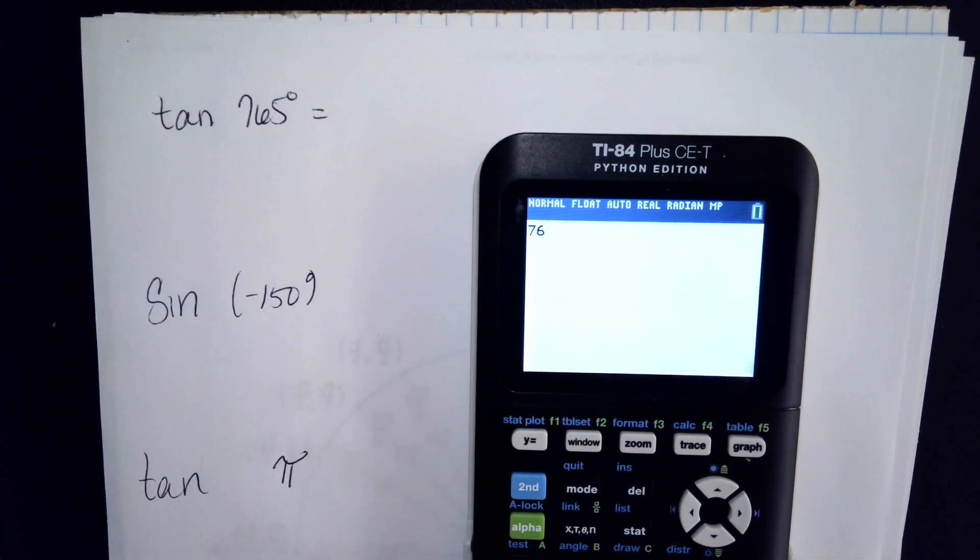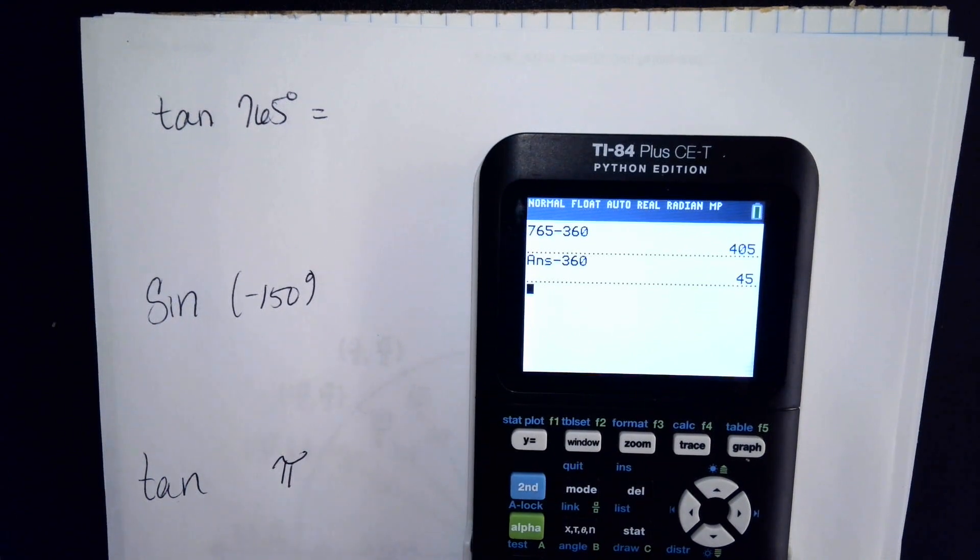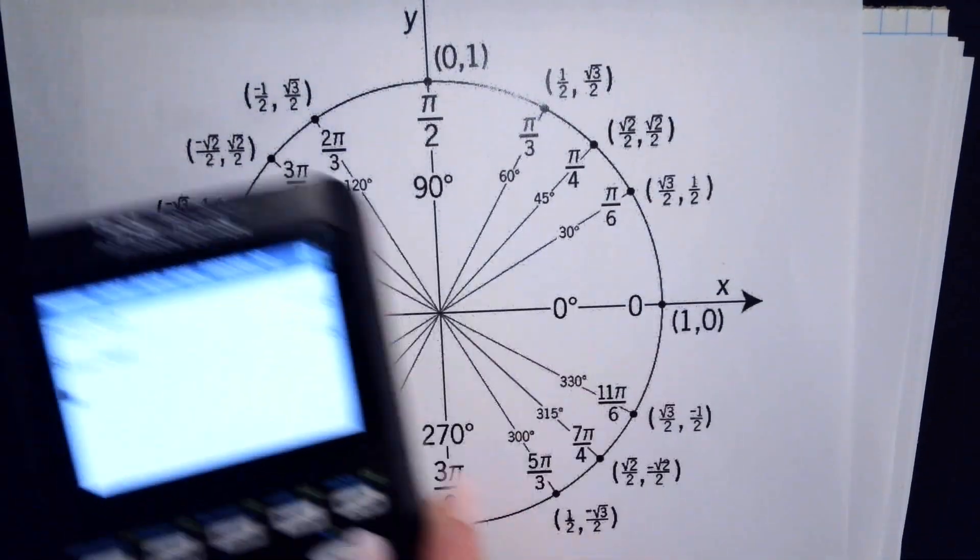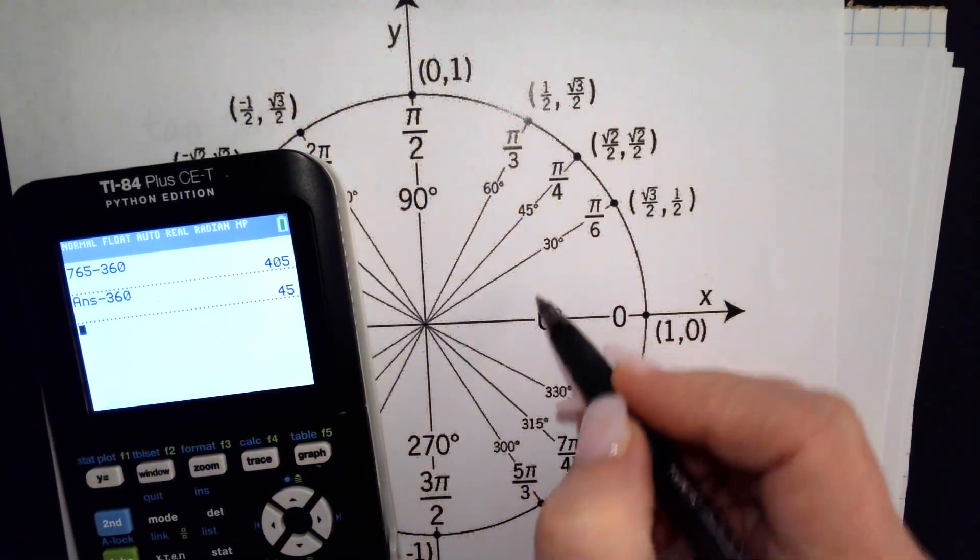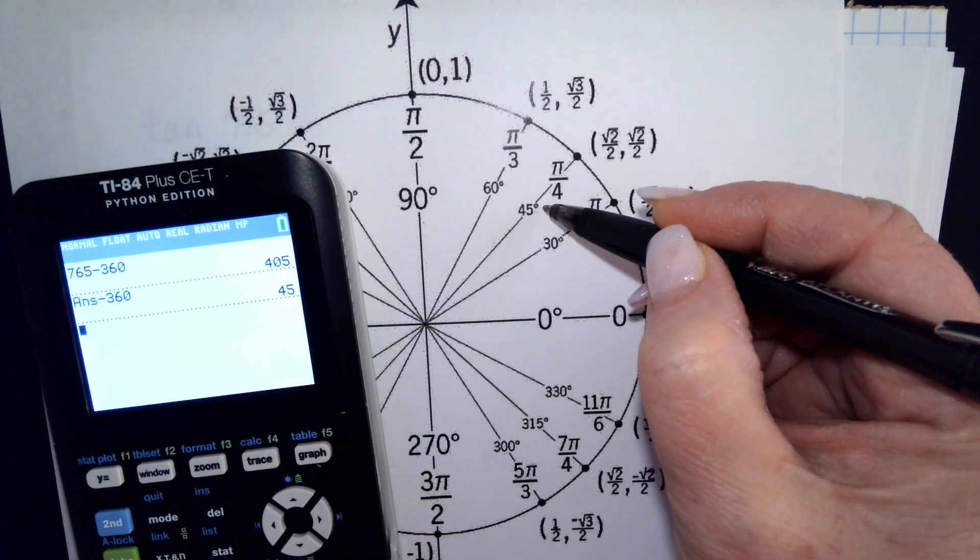Because that's going to be my reference angle. So 765 minus the first trip around the circle is 405. I'm going to go another trip around the circle. It leaves me with 45. So after two trips around, my reference angle is 45 degrees.